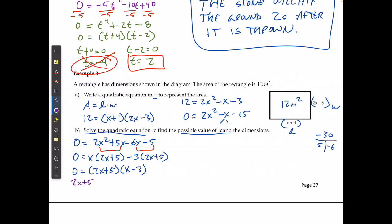Well, if 2x plus 5 is equal to 0, 2x is going to equal negative 5 or x is going to equal negative 5 over 2. In the other case, if x minus 3 is equal to 0, x is going to equal 3.